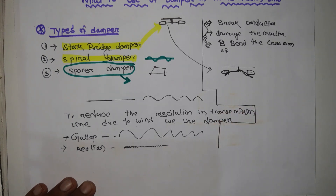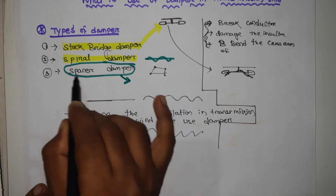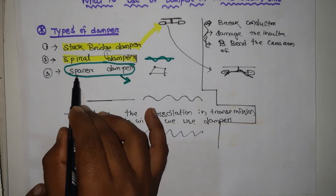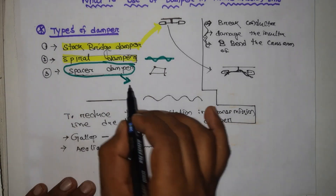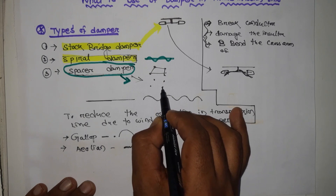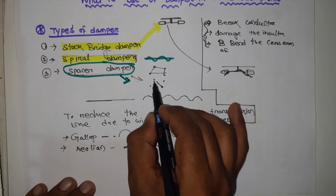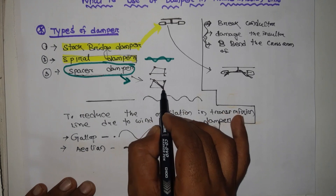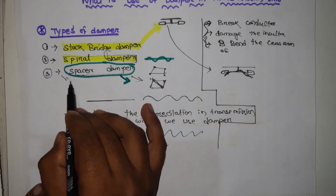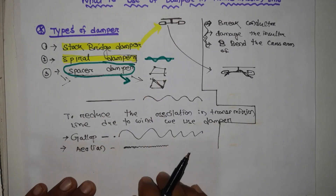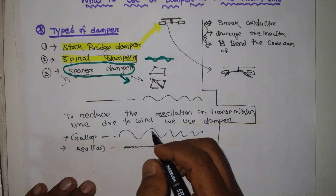The spiral damper also eliminates oscillation, and the spacer damper does too, but the spacer damper has an extra advantage: it maintains a distance between the wires. When wind occurs, the wires could clash together, but the spacer damper keeps a proper spacing between wire to wire. I hope you all understand about the damper. If you like this type of video please comment. Thank you for watching.